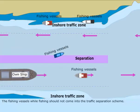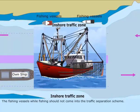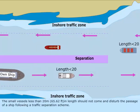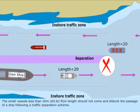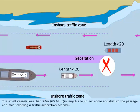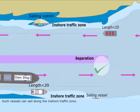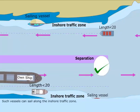Fishing vessels, while fishing, should not come into the traffic separation scheme. Small vessels less than 20 meters or 65.62 feet in length should not come and disturb the passage of a ship following a traffic separation scheme. Such vessels can sail along the inshore traffic zone.